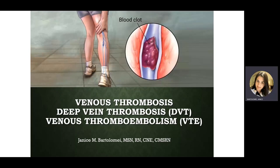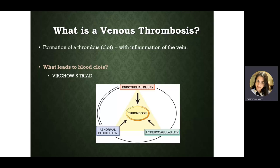Today we're going to talk about venous thrombosis, also called venous thromboembolism. If the thrombus or clot is in the deep veins of your leg, we call it deep vein thrombosis. It could also be in the arm or any vein that is deep within the tissue. Basically, it's a clot that forms in a vein and causes inflammation of that vein. We can have superficial clots or deep vein clots.